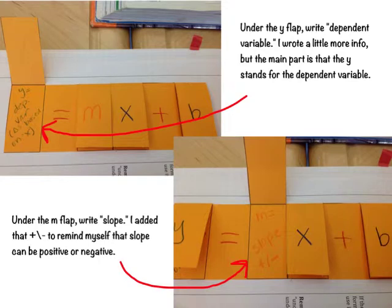Under the M flap, write slope. I also added the plus and minus to remind myself that slope can be positive or negative.